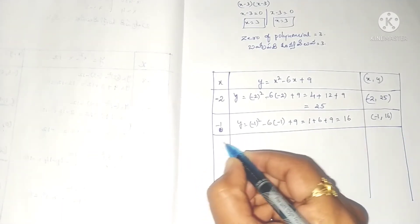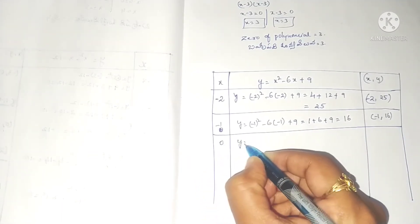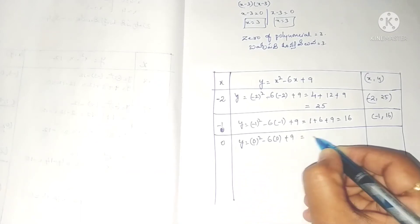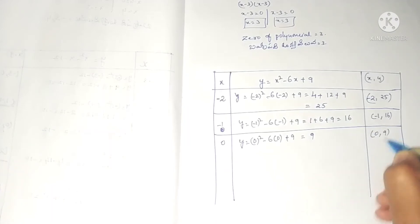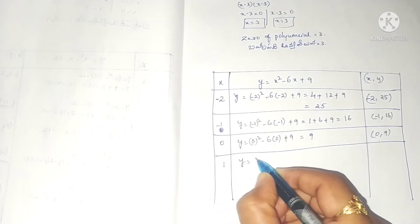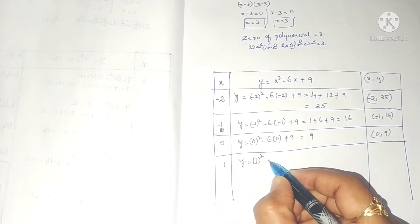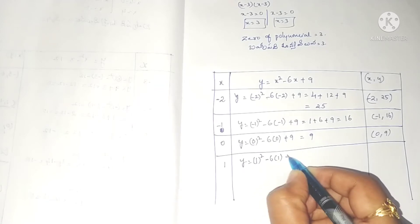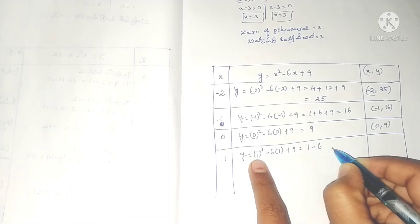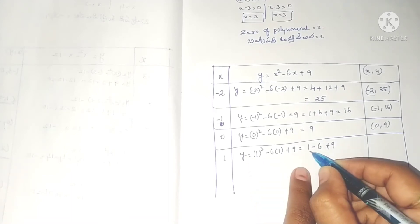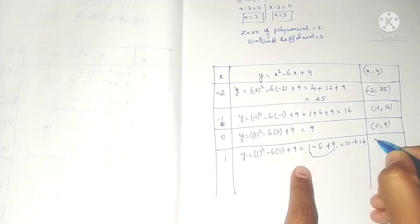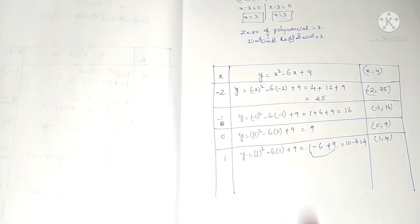Next, take x = 0: y = 0 - 0 + 9 = 9, so the point is (0, 9). Then x = 1: y = 1² - 6(1) + 9 = 1 - 6 + 9. First do addition: 9 + 1 = 10, then 10 - 6 = 4. So the point is (1, 4).